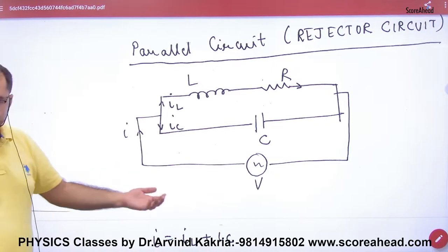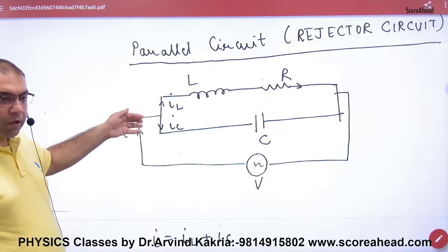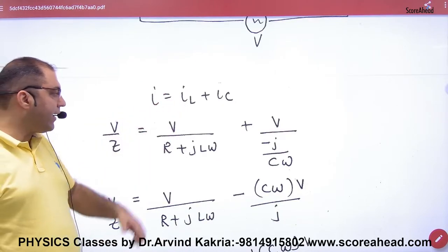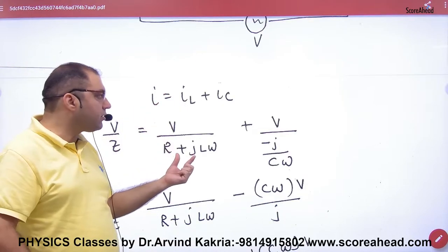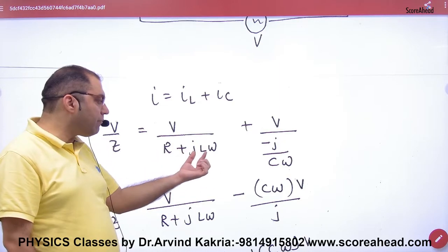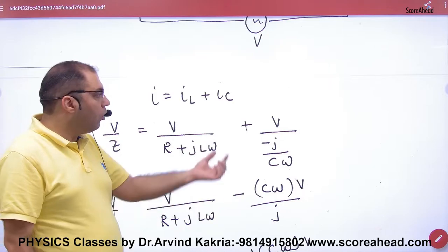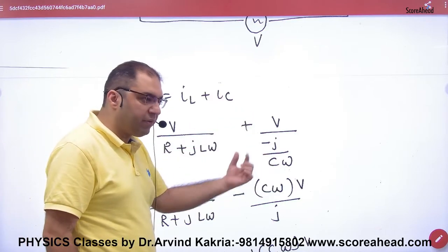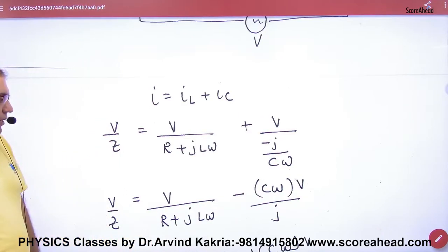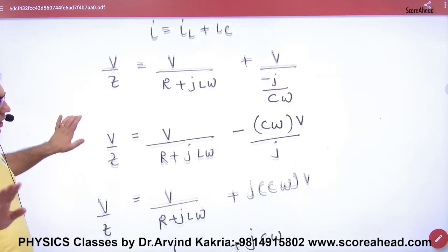To bas brief me bata hunga ki current I aya, kuch current upper IL, kuch current niche IC. Ismeh IL kya hota hai, V upon resistance, or resistance phasor algebra ki form me kya kiya tha, R plus j times L omega. Or IC, V upon minus 1 by C omega, kyunki capacitor meh current pichhe hotta hai.